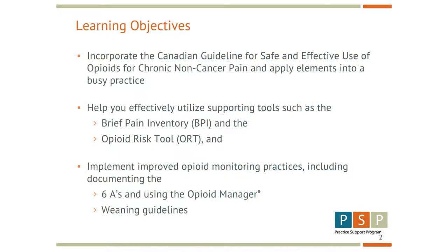The Canadian National Opioid Use Guidelines was launched around May 2010 and was a collaborative between many of the colleges across Canada and a huge key knowledge leader group. It's basically split up into about five modules and over 24 recommendations, and it helps guide you how to start a trial, how to screen for the best patients, and in those that we need to taper, how to deal with those things. There are a lot more tools that you can find in those guidelines.